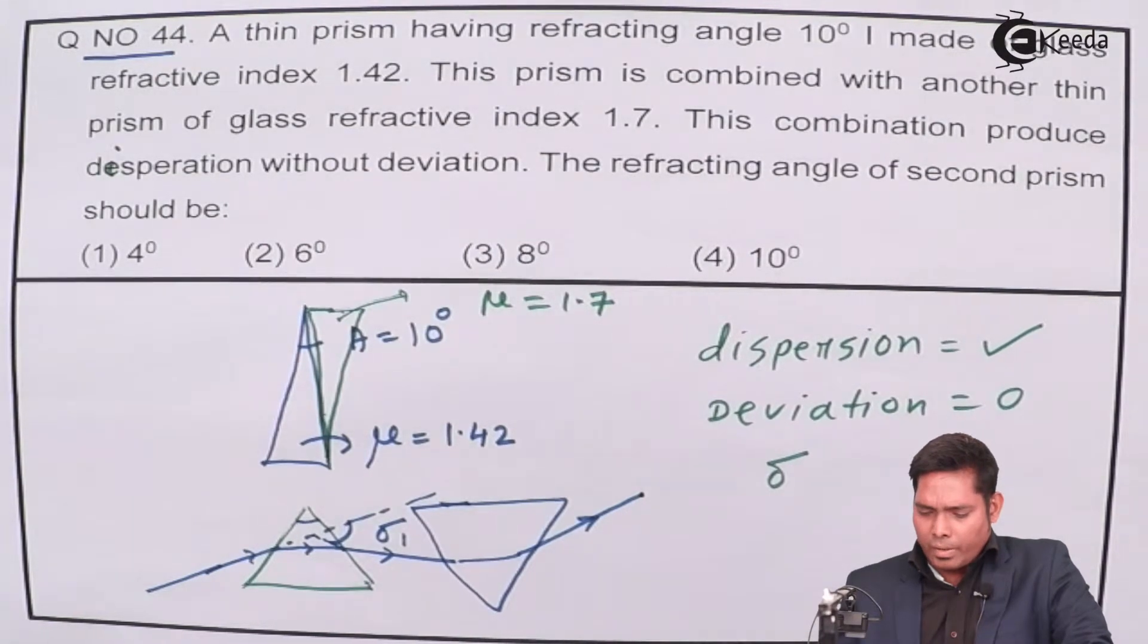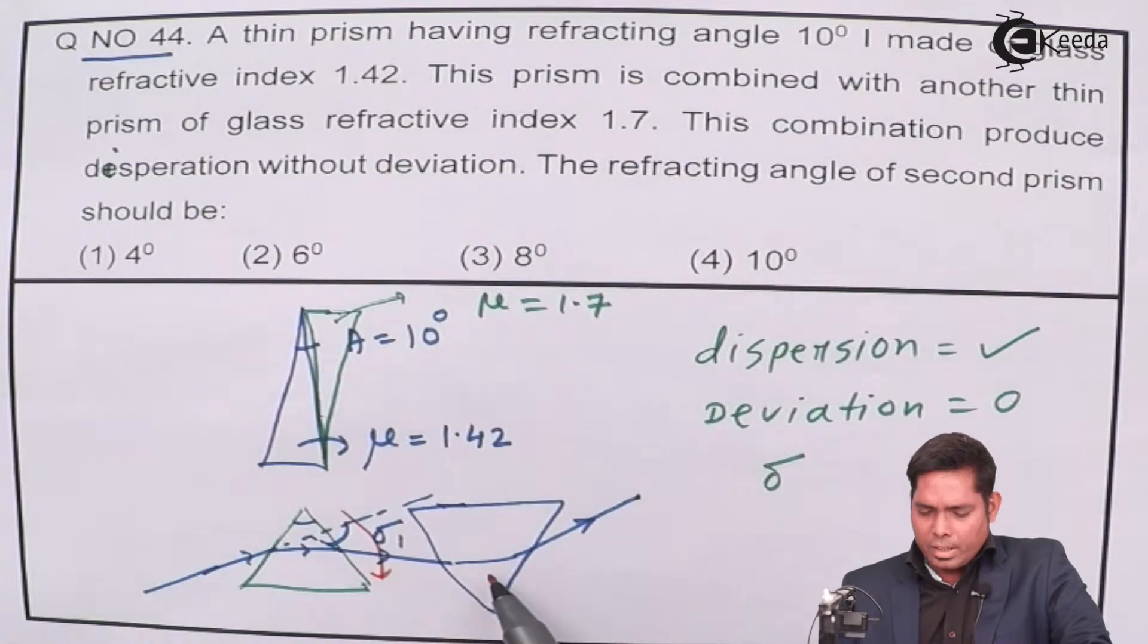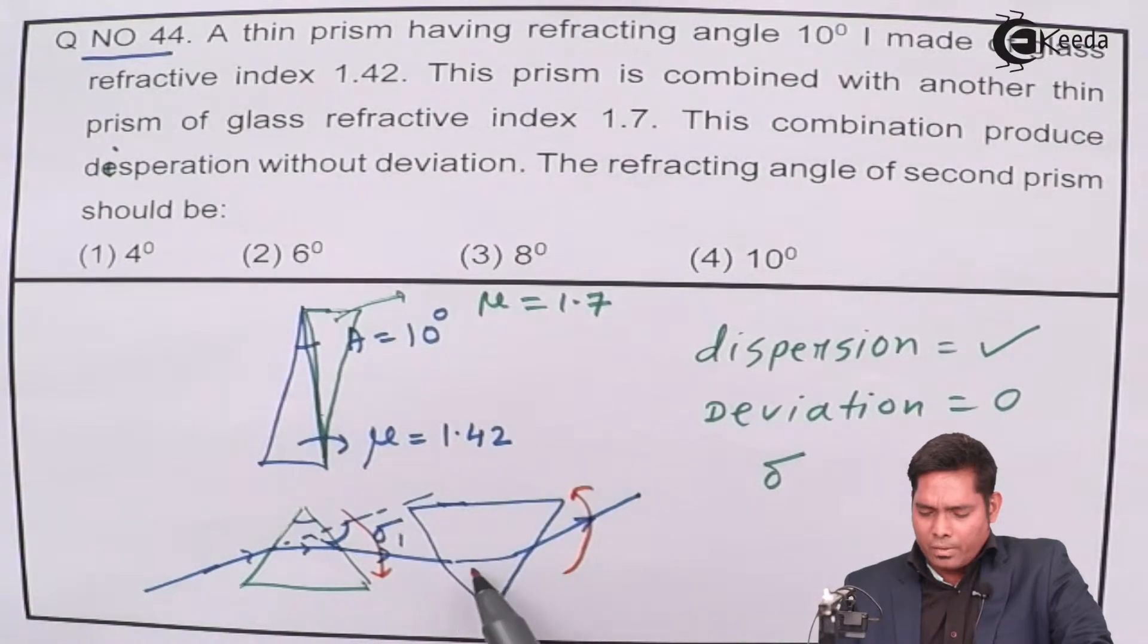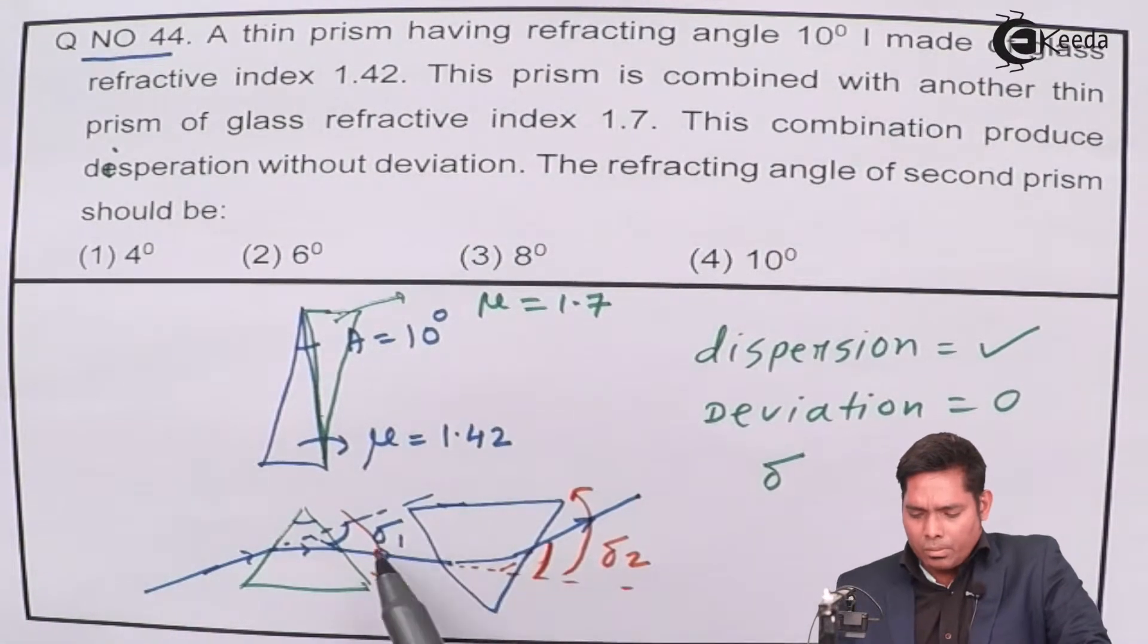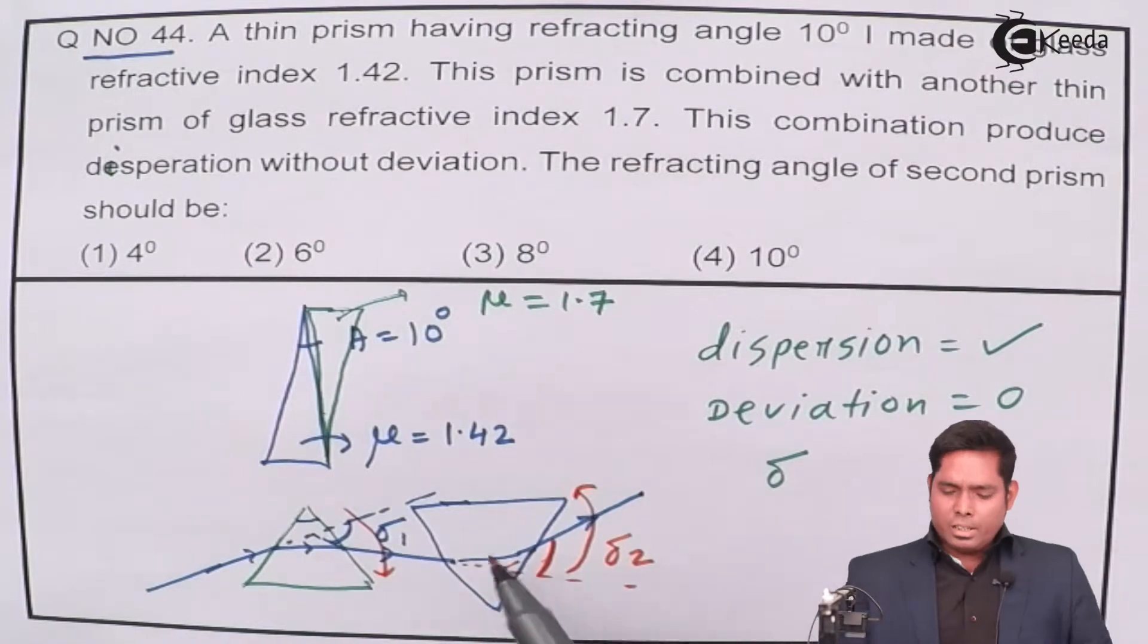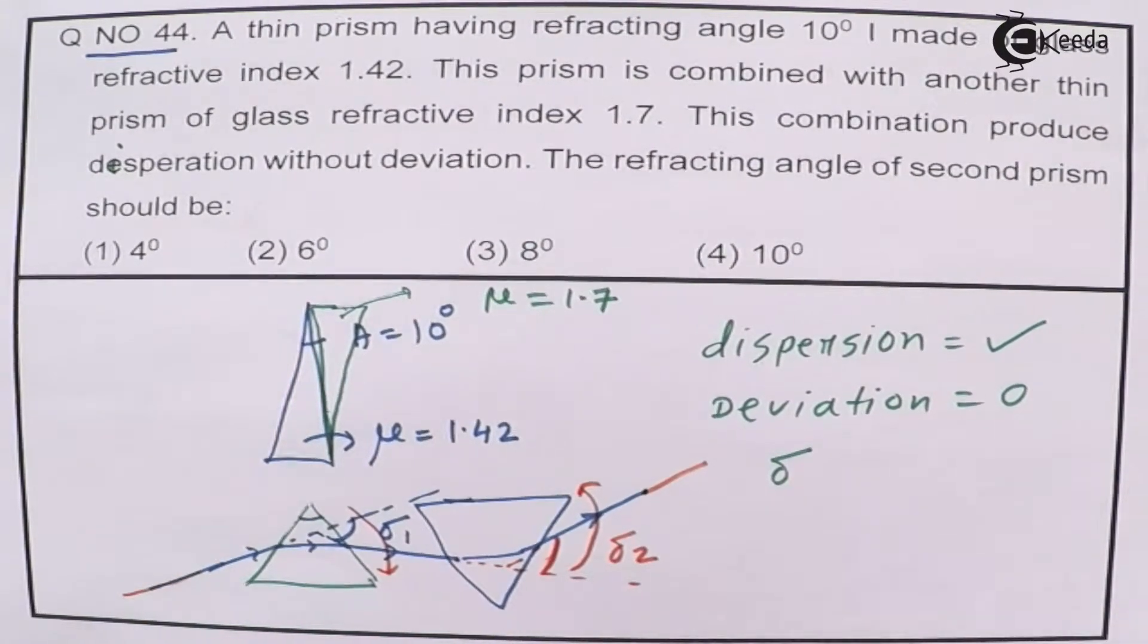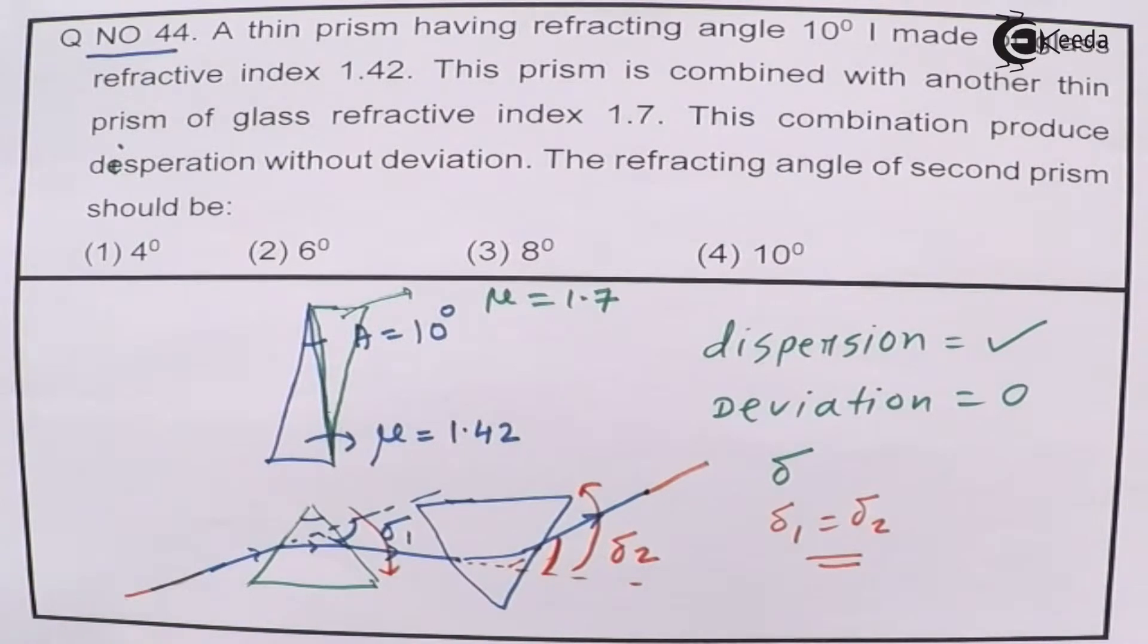If the first prism deviates by delta 1, and the second prism deviates by the same amount, then there is no deviation. The first case is clockwise deviation. In the second case, it will be anticlockwise. If these two angles cancel out each other, the ray will go without deviation.